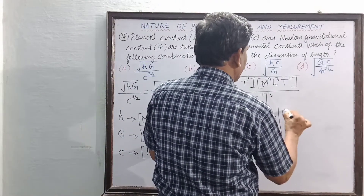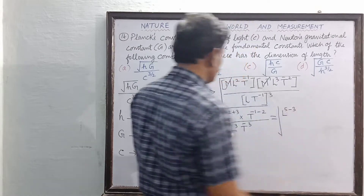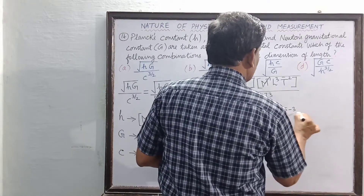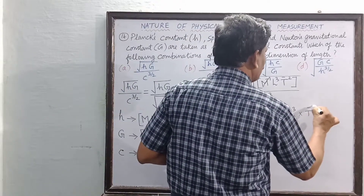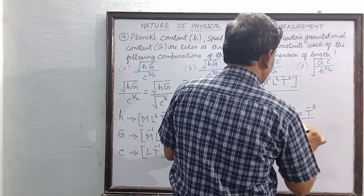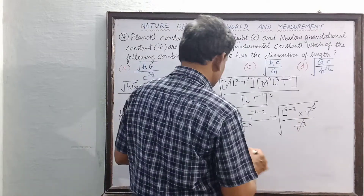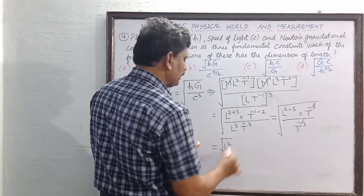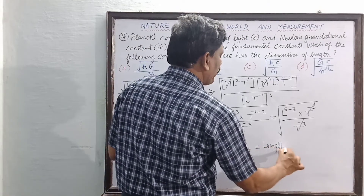L⁵ divided by L³ gives L². T⁻³ divided by T⁻³ cancels, leaving us with square root of L². The square root of L² is L, which is the dimension of length. So Option A gives us the dimension of length.